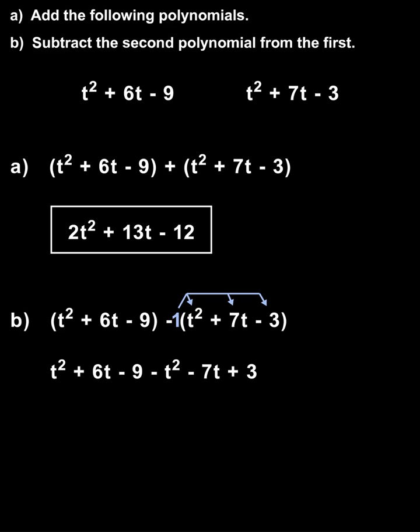Now, we combine like terms. t squared minus t squared cancels out. Positive 6t minus 7t is negative 1t, or negative t, and negative 9 plus 3 is negative 6.